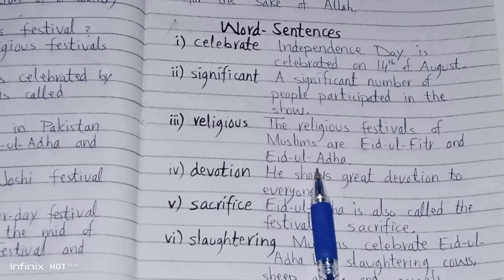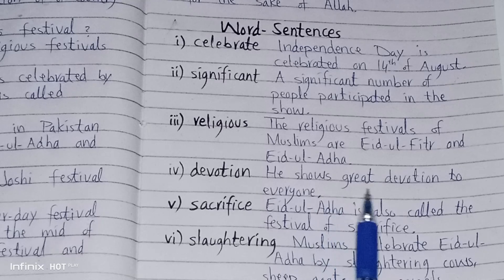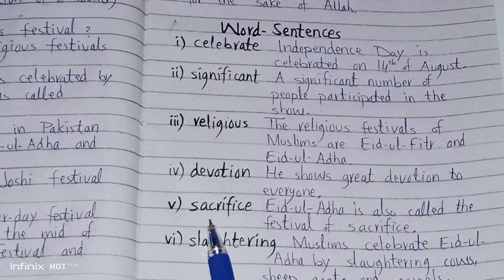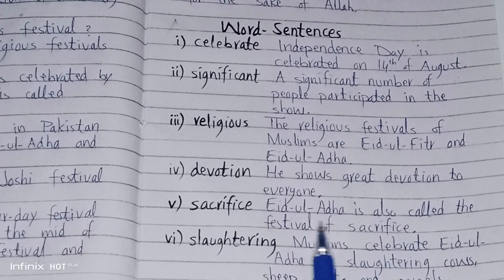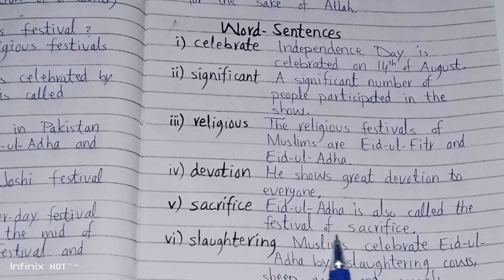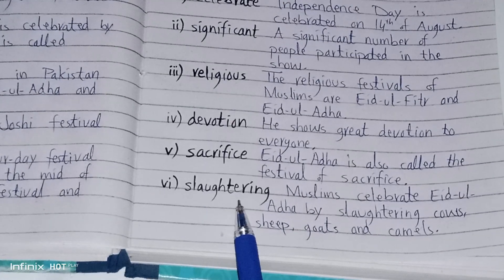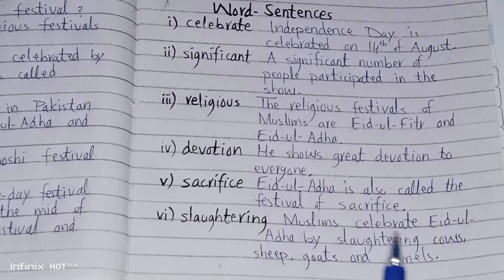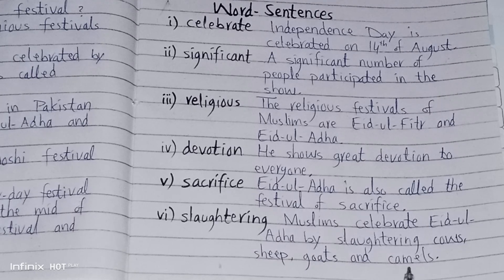Next word: devotion — he shows great devotion to everyone. Next word: sacrifice — Eid ul Adha is also called the festival of sacrifice. Last word: slaughtering — Muslims celebrate Eid ul Adha by slaughtering cows, sheep, goats, and camels.